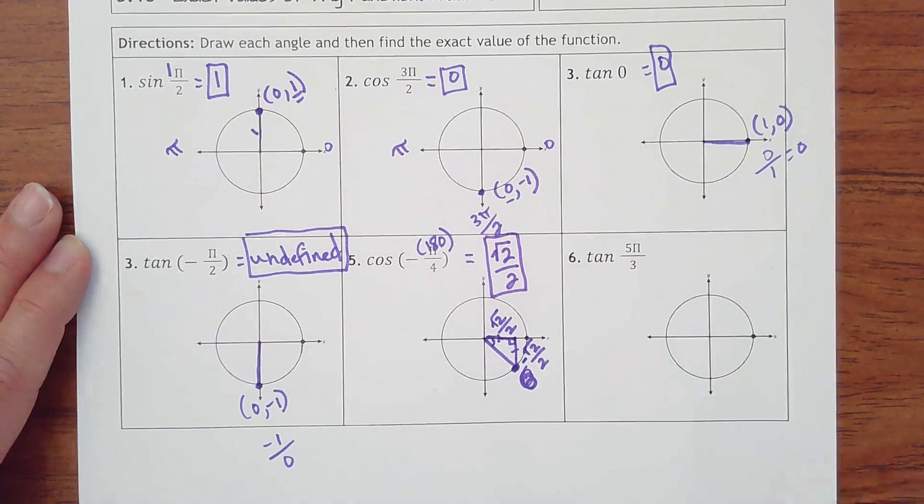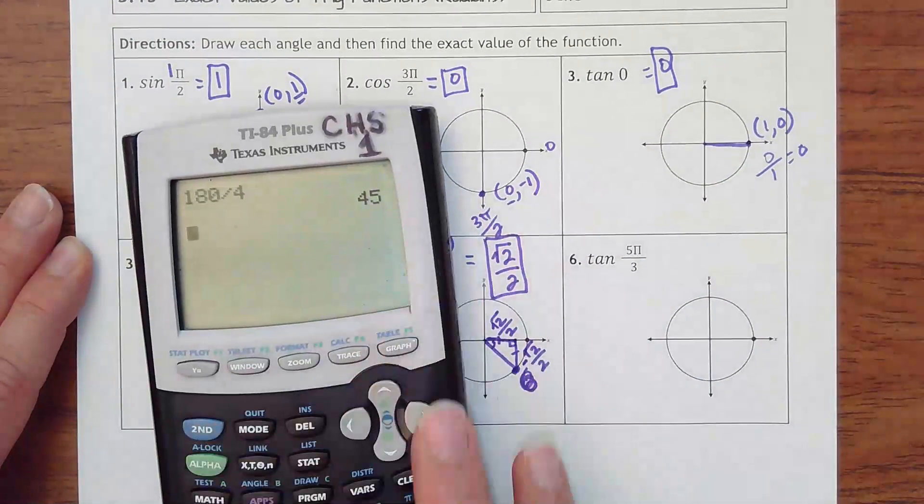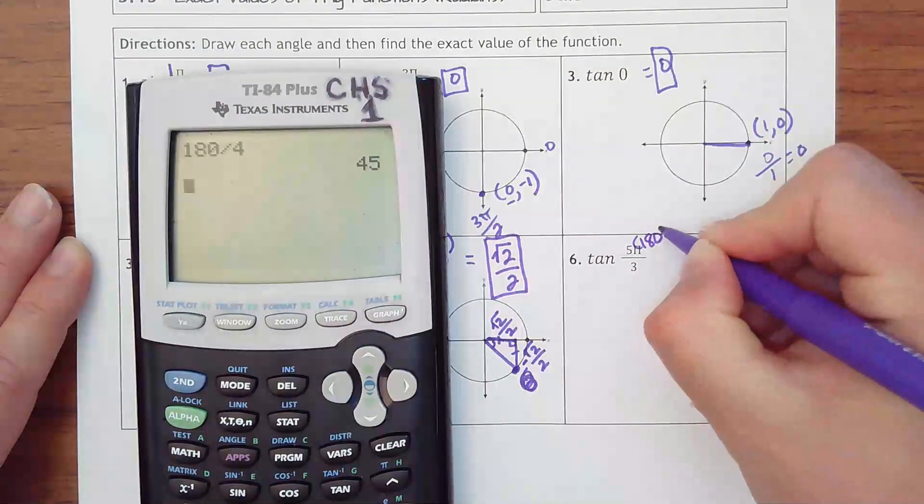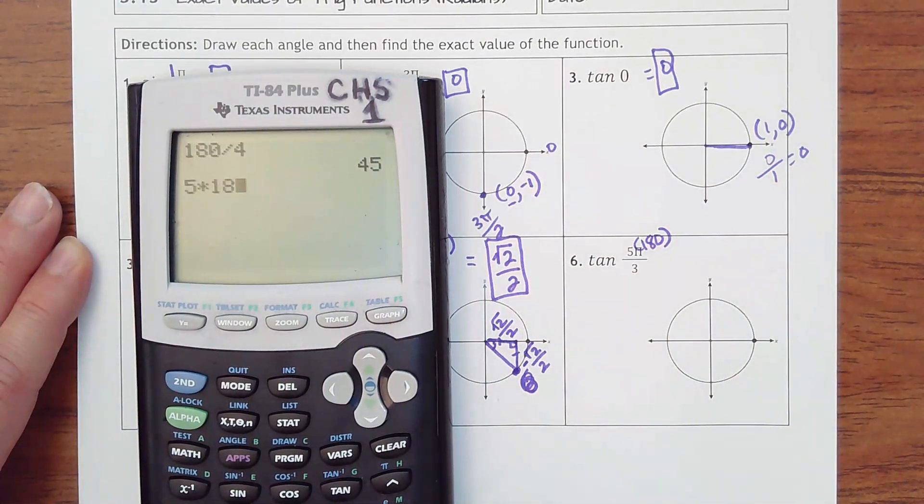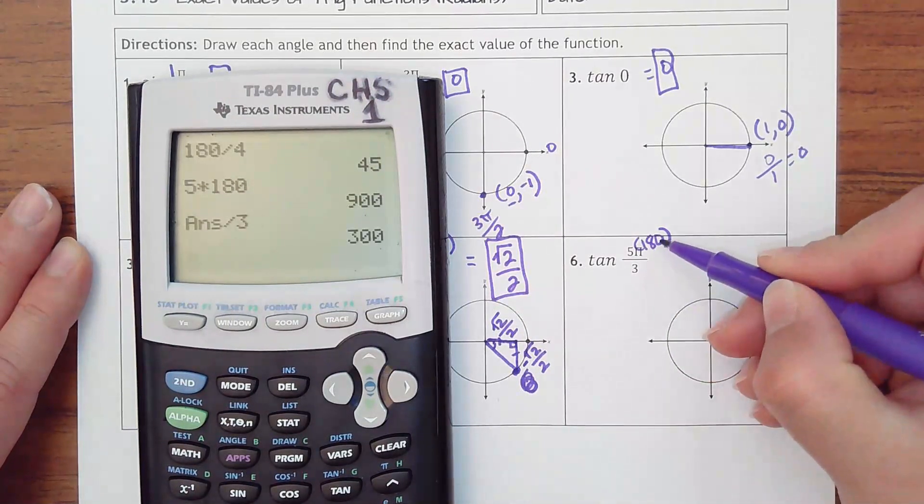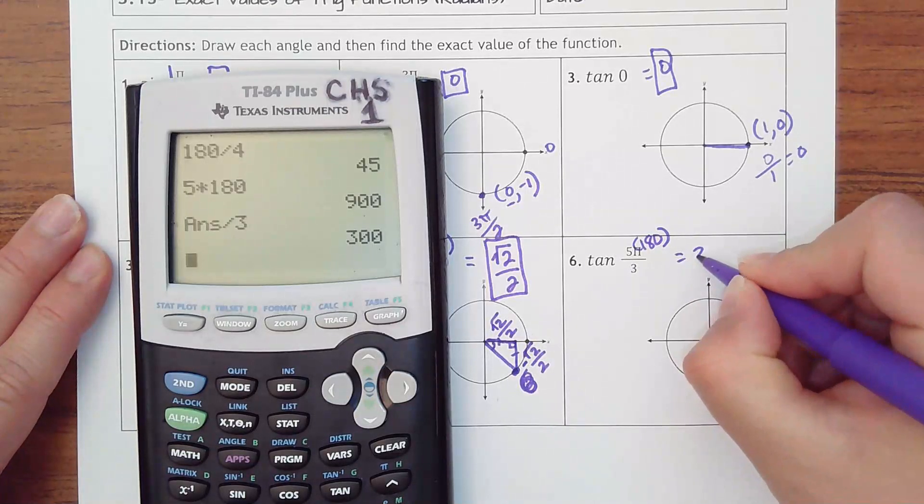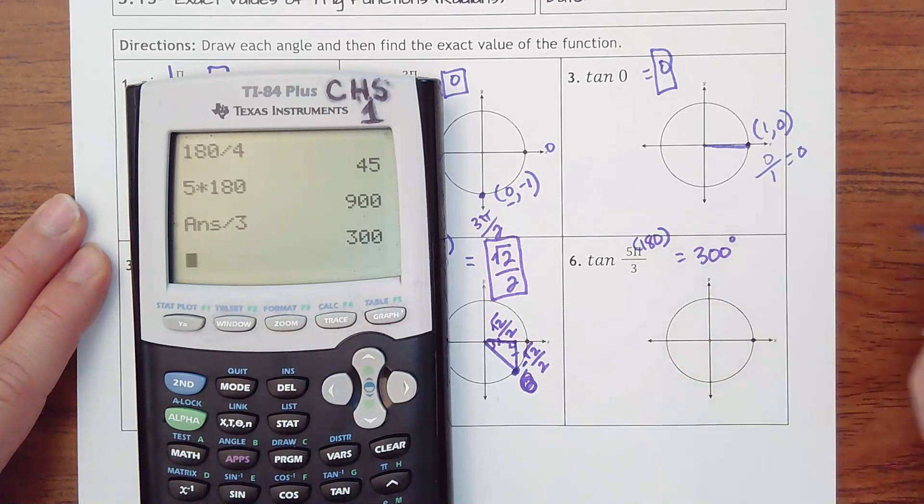And then last one is 5 pi over 3. It's 5 thirds of pi. I'll probably just go ahead and put 180 degrees in for pi. So 5 times 180 divided by 3. Or you could think a third of 180 is 60. 5 60s would be 300.